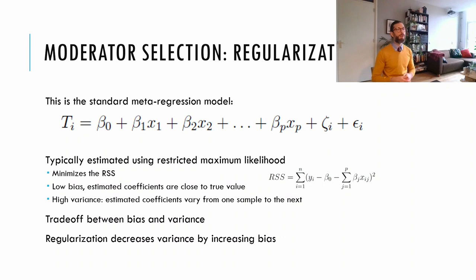And in restricted maximum likelihood, we choose the model parameters that minimize the distance between the model implied prediction and observed data. This method has low bias, which means that, on average, the estimated parameters are close to their true value. However, it also has high variance. That means that if we were to conduct two repeated meta-analyses on different subsections of the literature, the parameters of these meta-regression models would vary substantially.